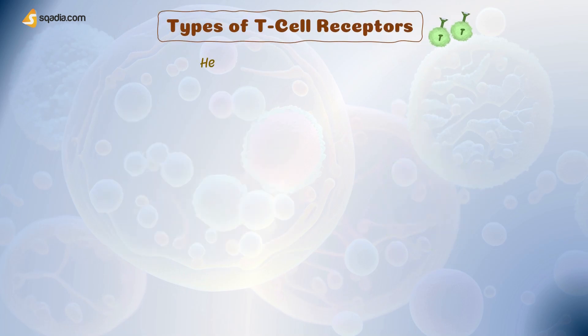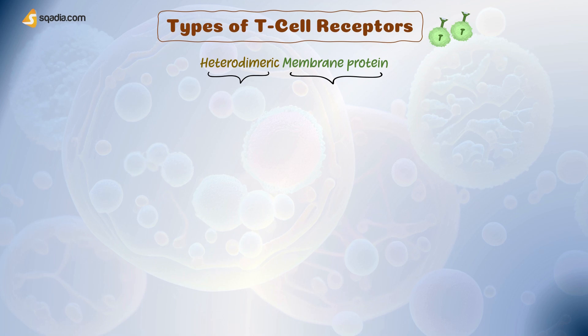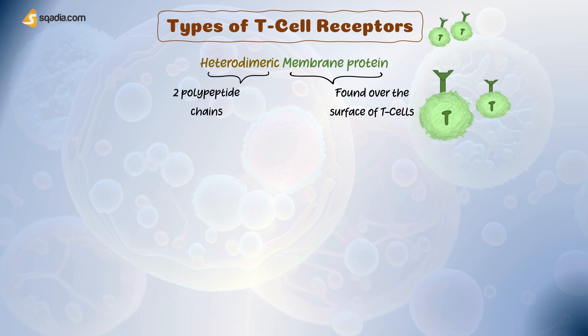To get a better understanding of TCRs, we will start with its types and then structure. Normally we say TCR is a heterodimeric membrane protein. There are two terms here: heterodimeric and membrane protein. When we call it a membrane protein, it means it's a protein found over the cell membrane, or present over the surface of T-cells. Heterodimeric means it is not a simple protein, but a complex of proteins made of two different types of peptide chains.